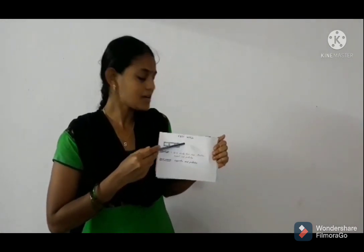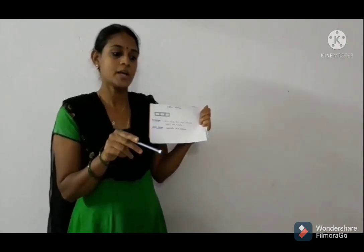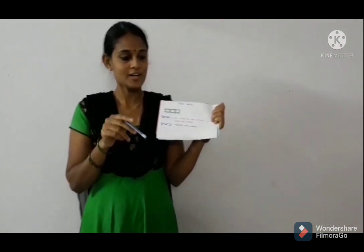The next part is cell wall. The extra layer formed on the outer layer of the cell membrane in plants is called cell wall. This cell wall gives support, protection, and a safe structure to the cell. Cell wall is only present in plant cell, not in animal cell. All of you write these differences in your notebook.